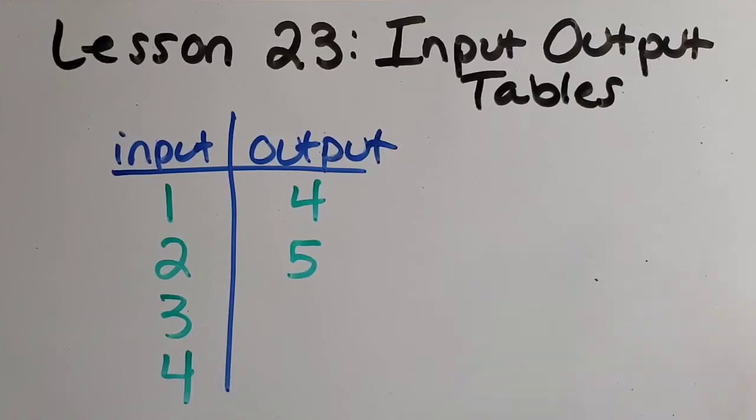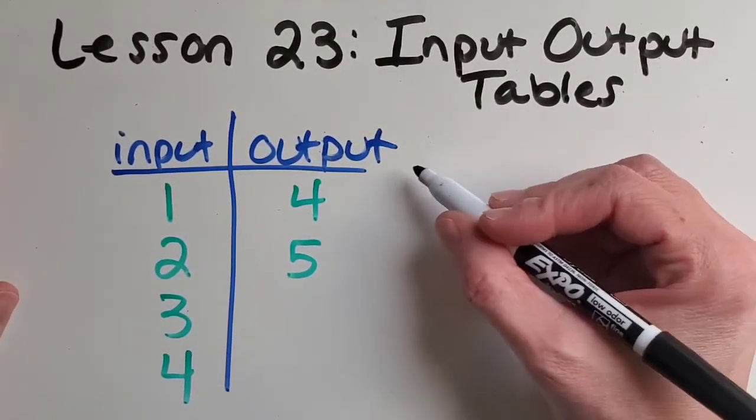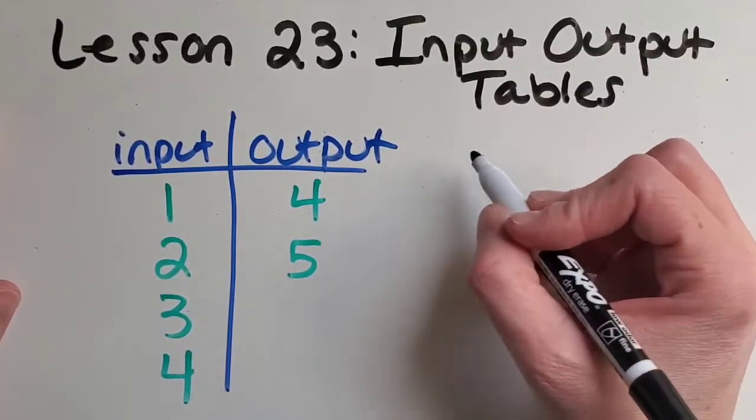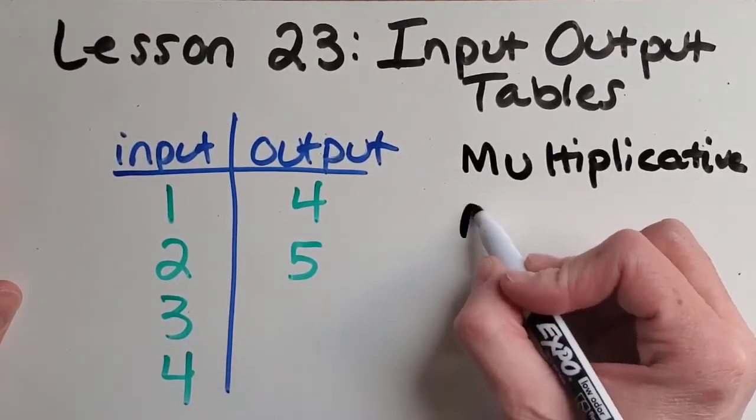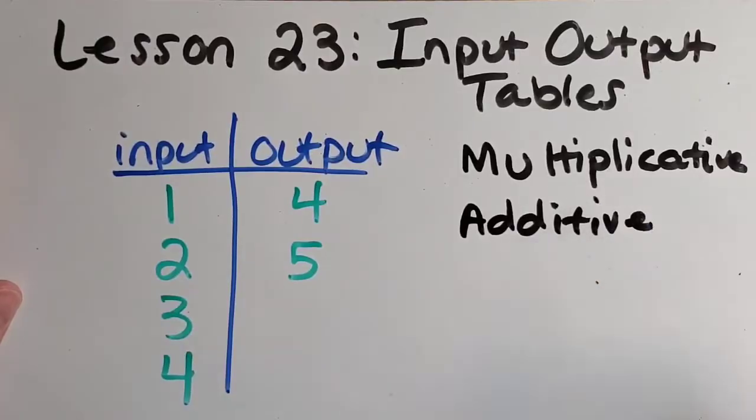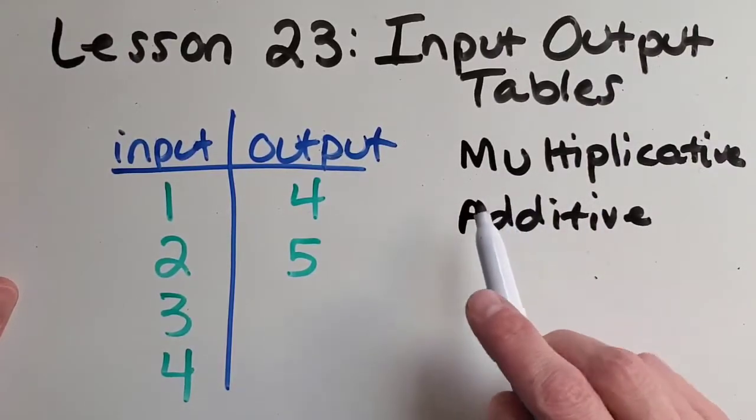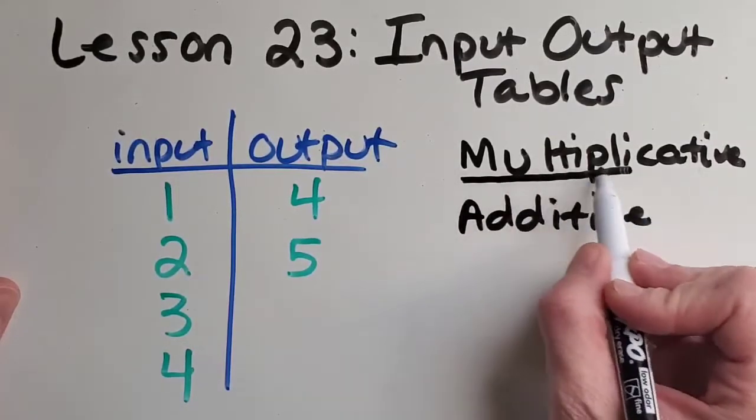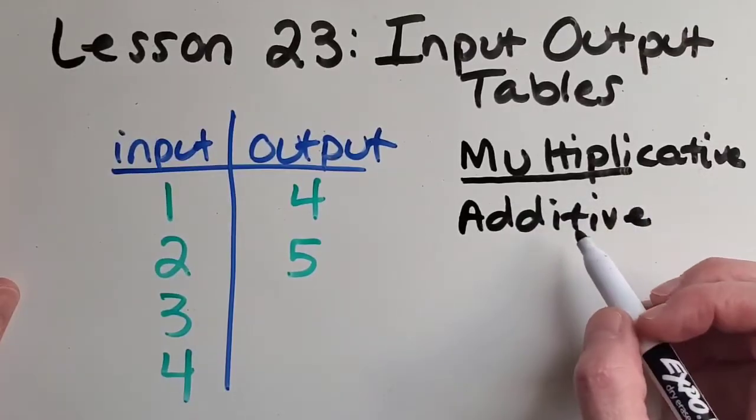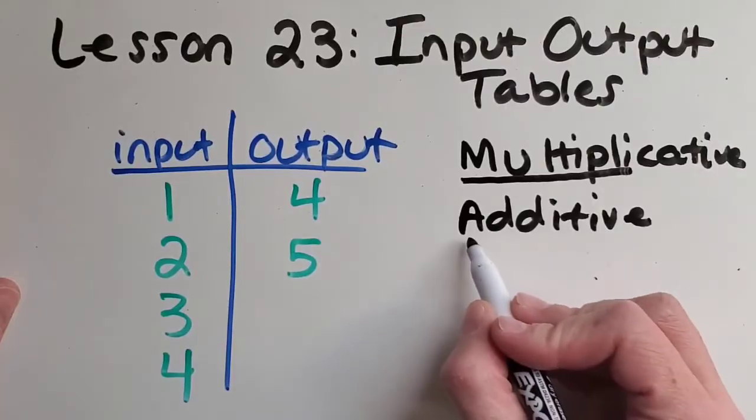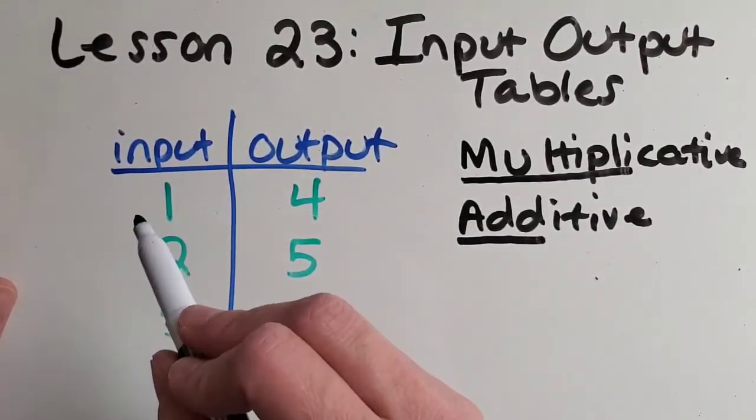Here's our next input-output example. Before we start, I want to explain one thing, that there are two different types of input-output tables or patterns that we're going to be working with today. One of them is called multiplicative, and the other is called an additive pattern. Let's see if we can find some clues in those words as to what they mean. What do you think multiplicative means? Good. Probably you noticed that it has what looks kind of like multiply in it. So it's a pattern that multiplies. The last example we could call a multiplicative pattern. And then the other type of pattern is additive, and it has, you guessed it, the word add in it. So those are patterns where you're adding. Let's find out if this one is multiplicative or additive.